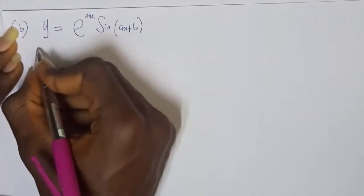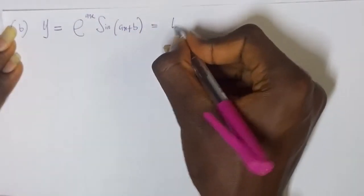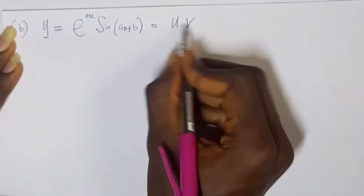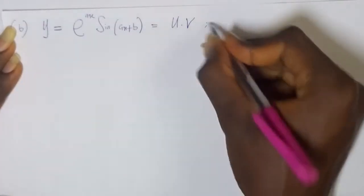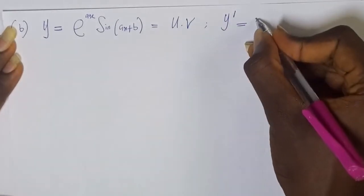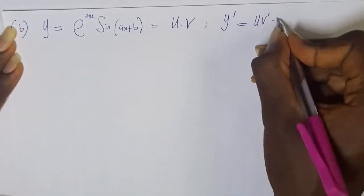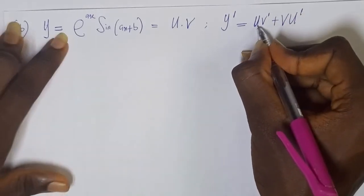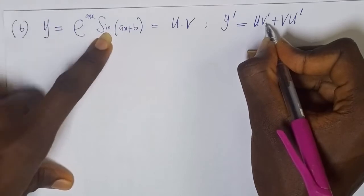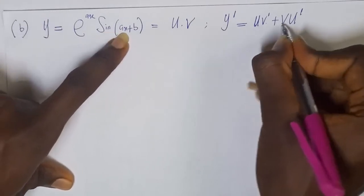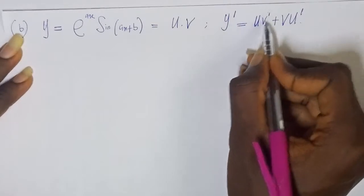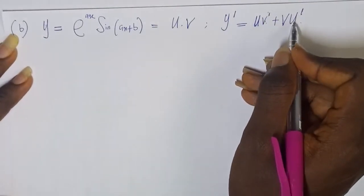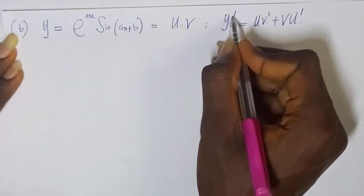Hence, since we already know what to do, then we need to find the first derivative. And you know, when you have u times v, if y equals u times v, we all believe that y' simply implies uv' plus vu'. That is, write u, then differentiate v itself, then write out v, and then differentiate u. So, v' means differentiate v with respect to x, and u' means differentiate u with respect to x. Hence, y' means dy/dx.